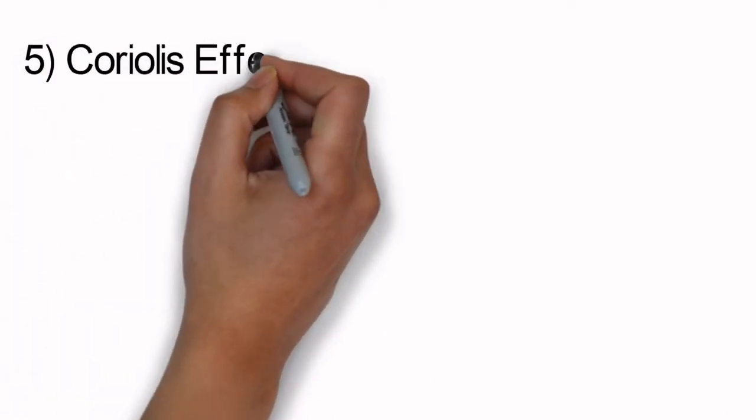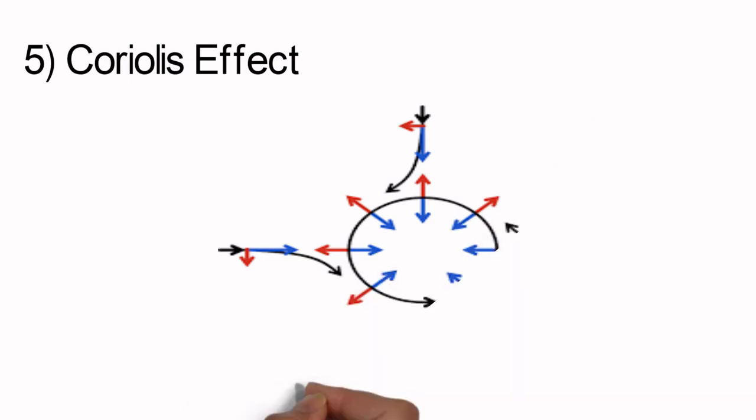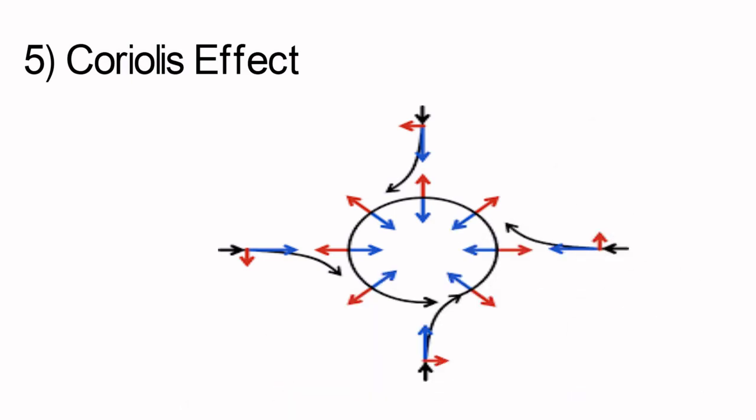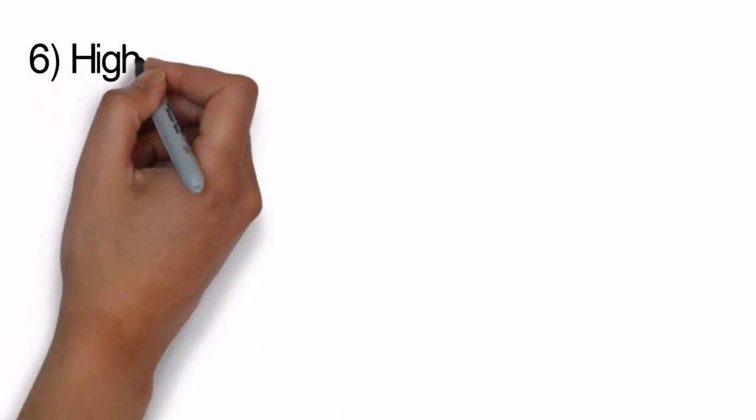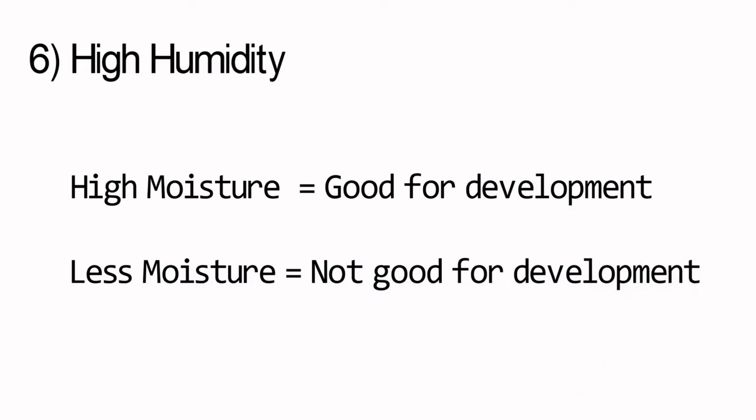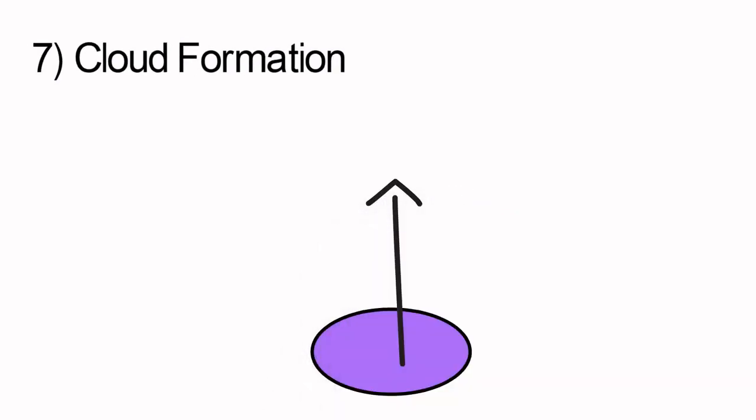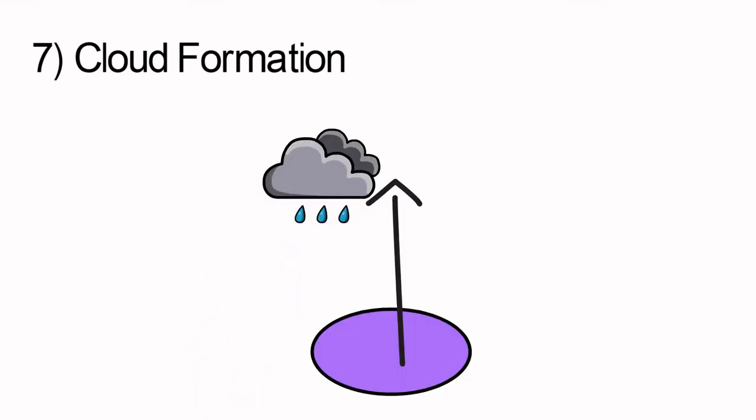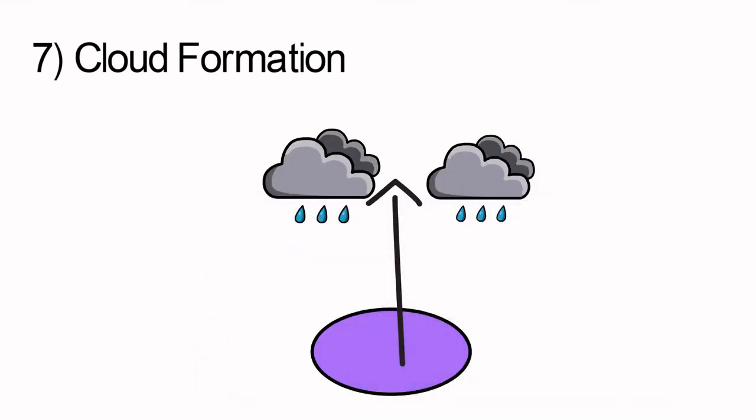Fifth, Coriolis effect or force. This effect is important because the spin moment of the cyclones is due to the Coriolis effect. Sixth, high humidity. More moisture content should be available during system development. If less moisture is available, the system couldn't develop. Seventh, cloud formation should be rapid. The clouds should form very fast. These are the factors responsible for development and intensification of cyclones.